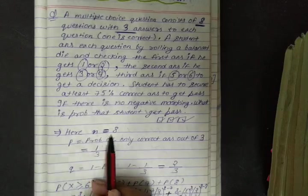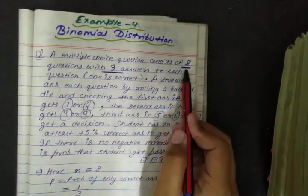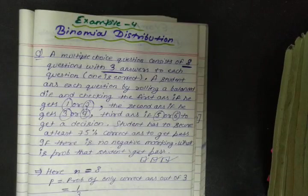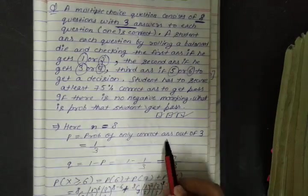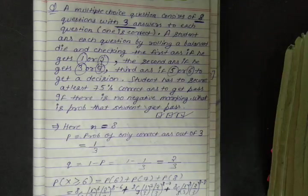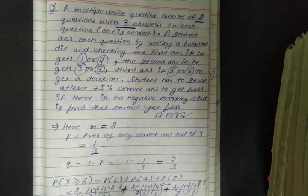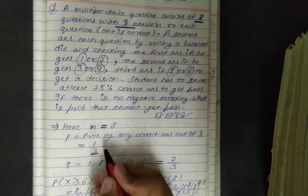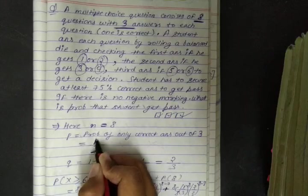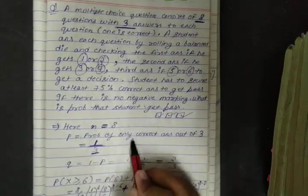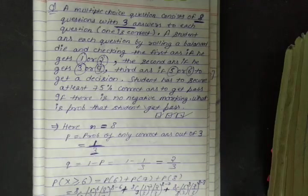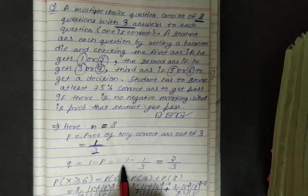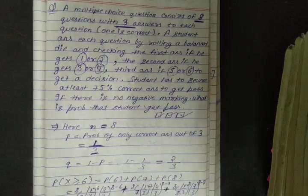Here n is 8, the total number of questions in the MCQ test. Small p is the probability of getting only the correct answer out of 3 answers. Since only one answer is correct out of 3, p equals 1/3. And q is 1 minus p, which is 1 minus 1/3, giving us q equals 2/3.